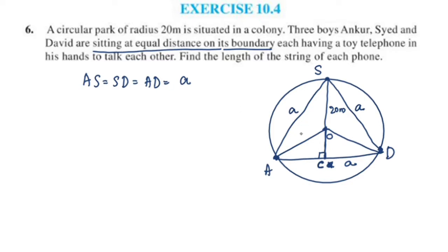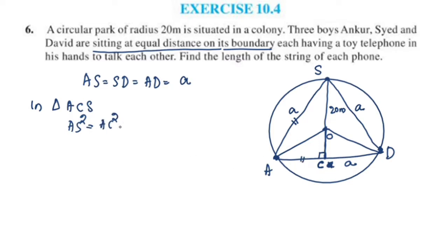I will put triangle ACS as a right-angled triangle. In the right-angled triangle ACS, AS² is equal to AC² plus SC².